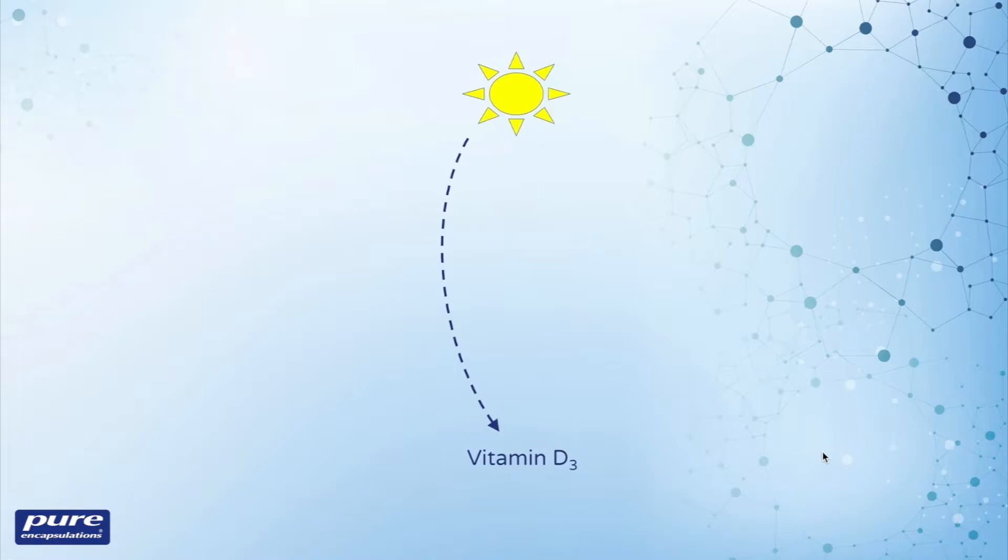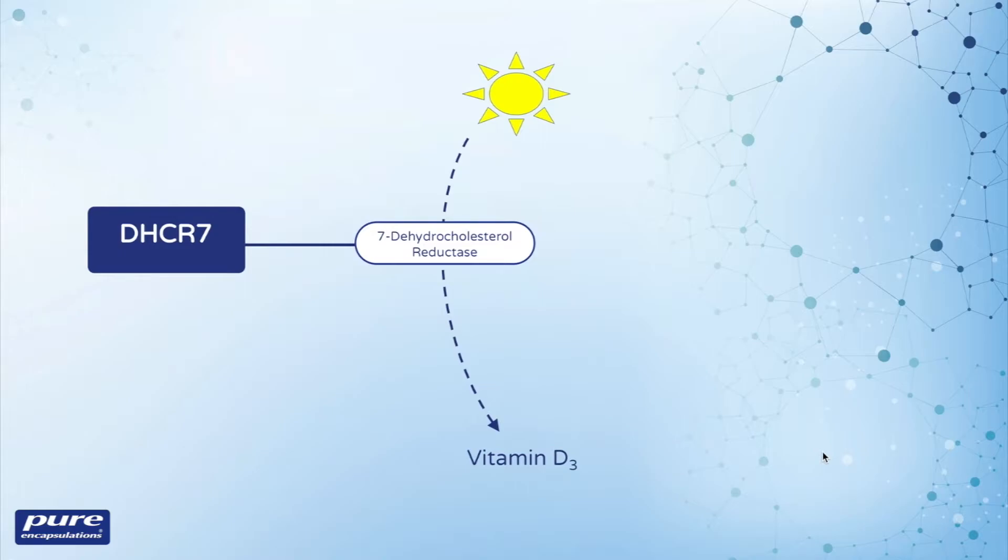The ability to synthesize vitamin D upon exposure to sunlight involves an enzyme known as 7-dehydrocholesterol reductase, encoded by the DHCR7 gene, which supports the availability of cholesterol, a precursor of the vitamin in the skin.